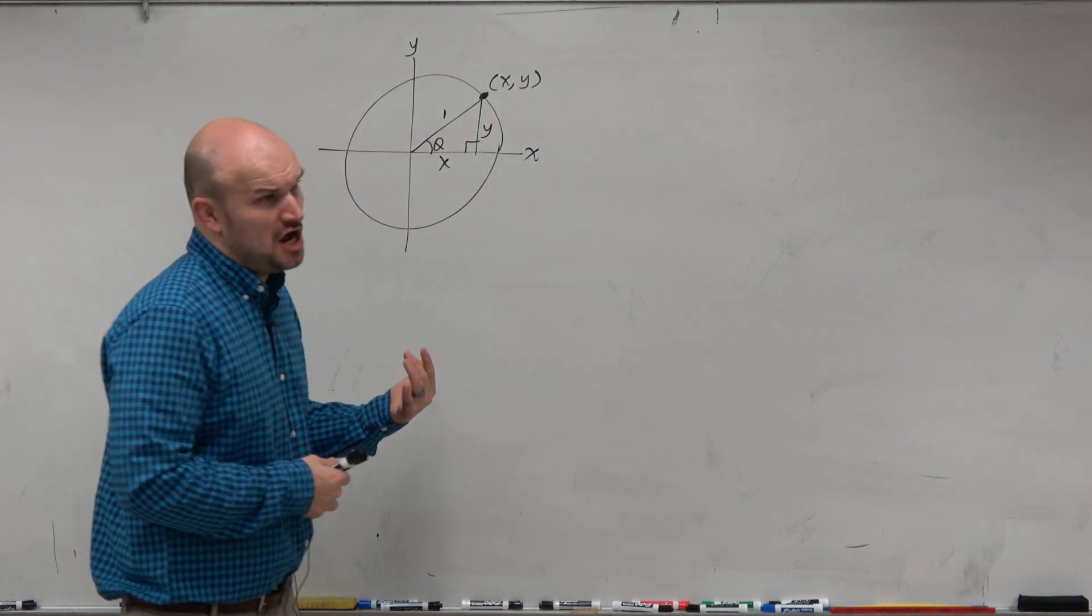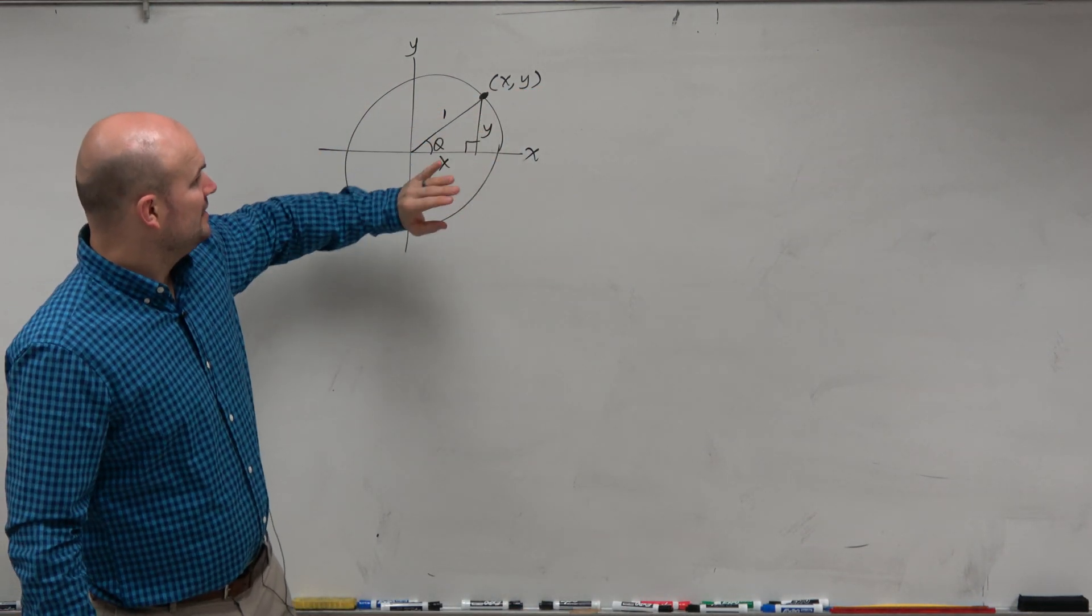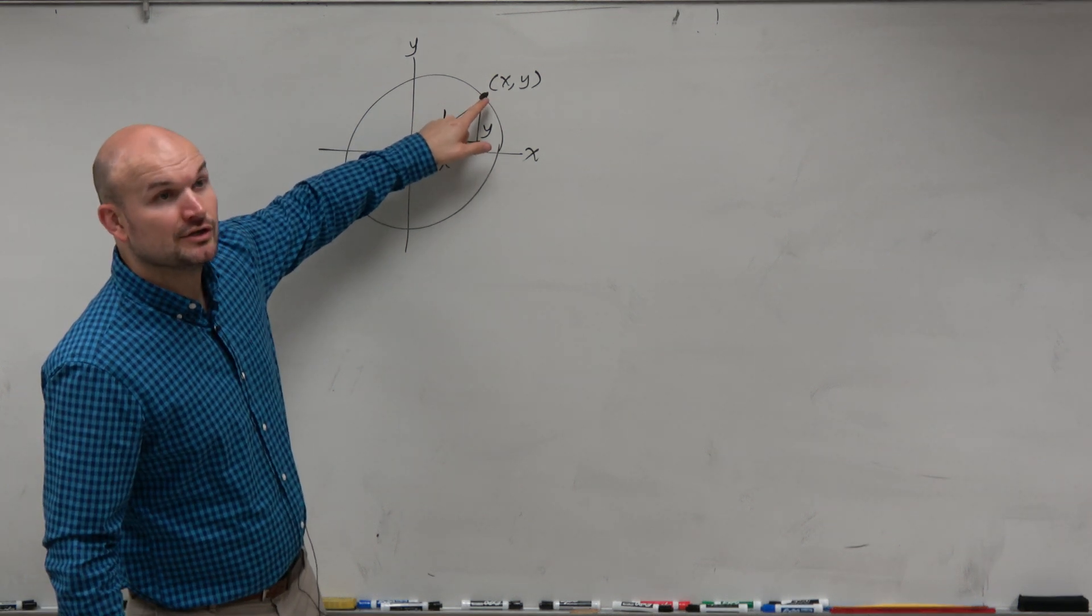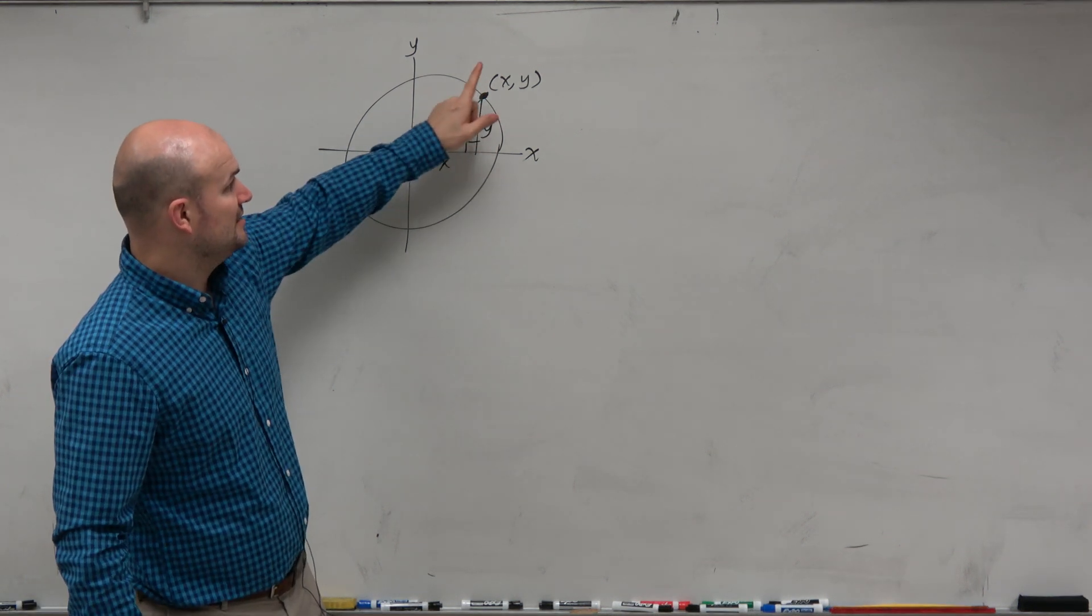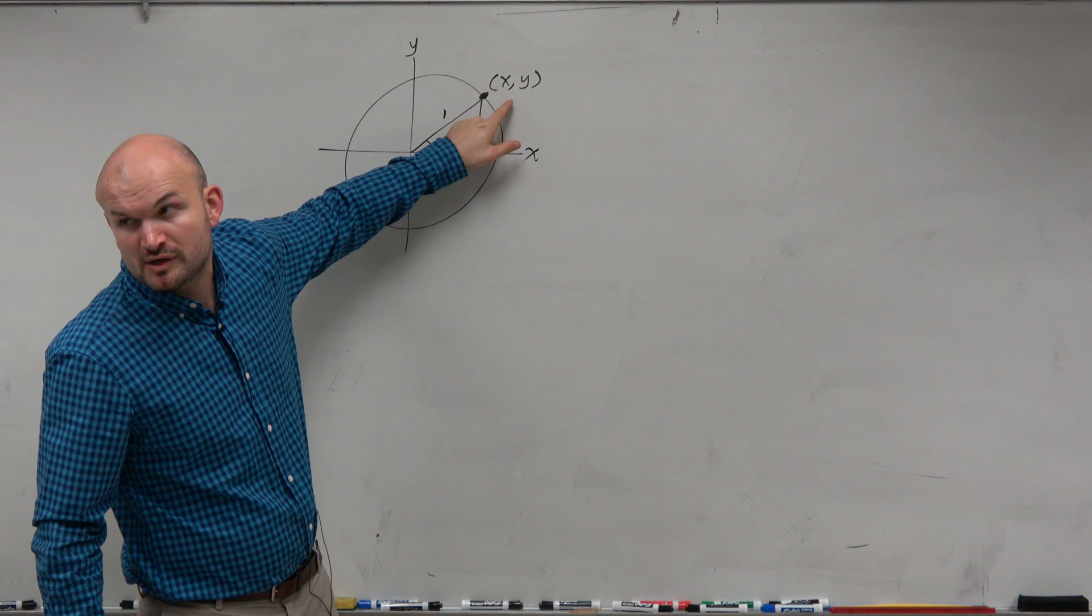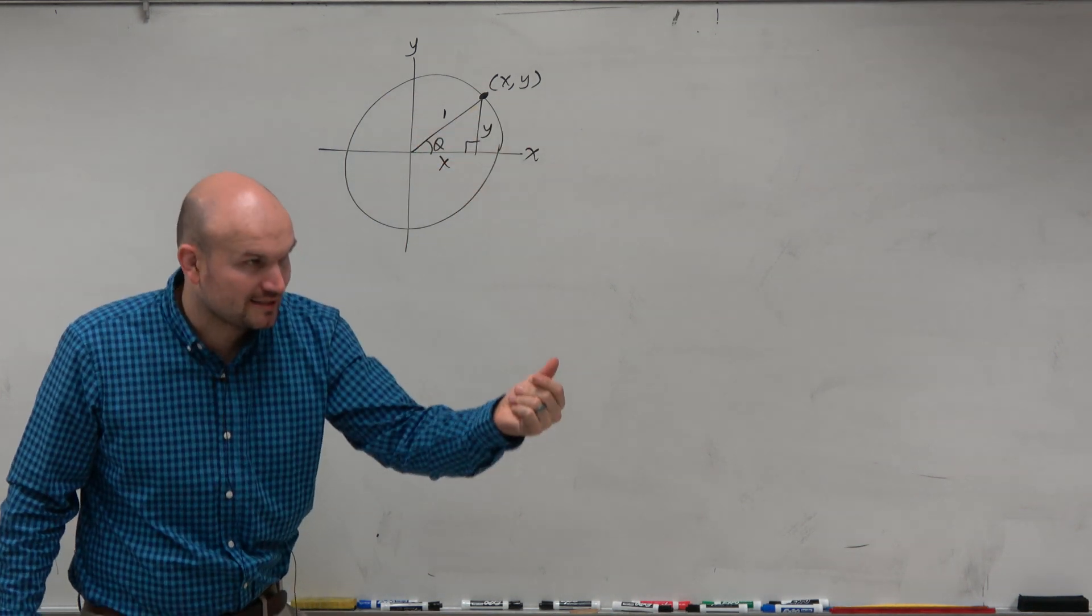Basically, what you guys did is, oh well, I know that the cosine of pi over 6 is basically the coordinate point on the unit circle that correlates to pi over 6, which is the x-coordinate, so it's square root of 3 over 2, right? And that was very quick for us.